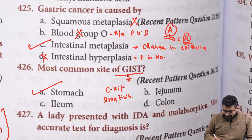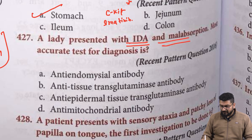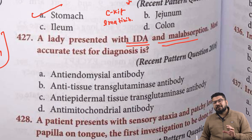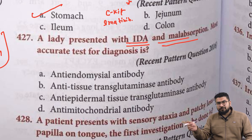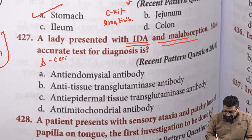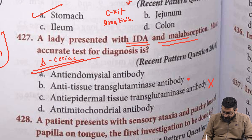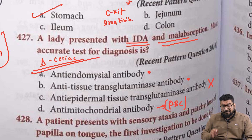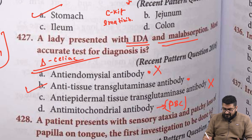A lady presents with iron deficiency anemia and malabsorption. Iron deficiency with malabsorption suggests a problem in the duodenum — this is celiac sprue, since tropical sprue mainly affects the jejunum. To confirm celiac sprue, the test used is anti-tissue transglutaminase (anti-TTG) antibody. Anti-mitochondrial antibody is used in primary biliary cirrhosis (PBC). The best commercially available test is anti-TTG — answer B.